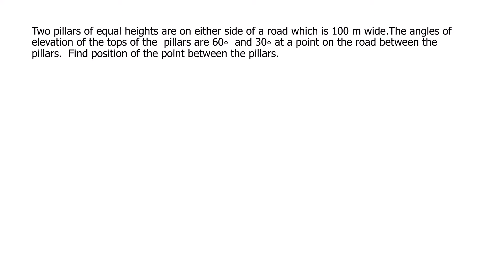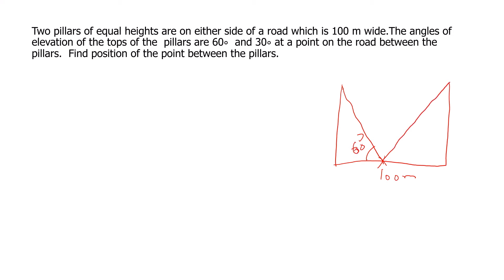In this question, you can see that two pillars of equal height are there on either side of the road. We have to draw two pillars of equal height. The width of the road is 100 meters wide. The angle of elevation of the top of the pillar are 60 degrees and 30 degrees at a point on the road between the pillars. From the point, if you look at the top of the pillars, the angle of elevation is 60 degrees, and from the other pillar it is 30 degrees.